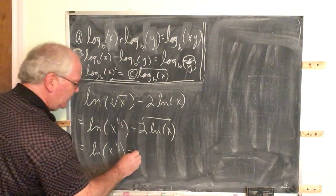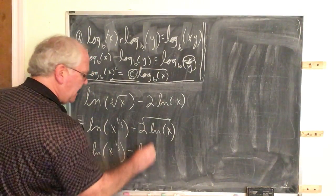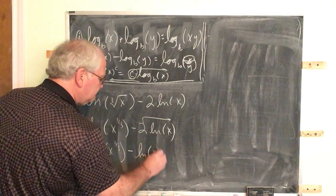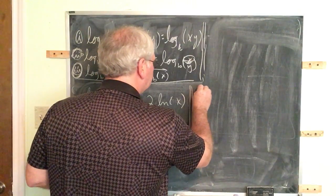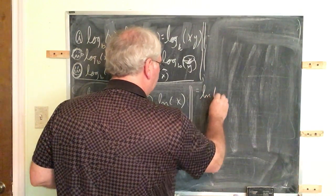But now this can be written as natural log of, this is x to the second power. And I'm going to write that. I'm just going to rewrite this so I can see it better.